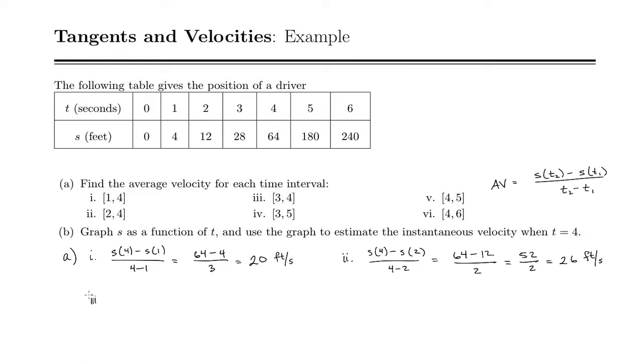For part 3, we have 3 and 4. So s of 4 minus s of 3 over 4 minus 3. So that's 64 minus s of 3 is 28 divided by 1. So 64 minus 28 is 36.